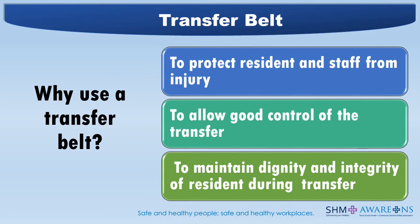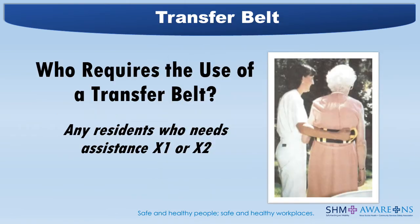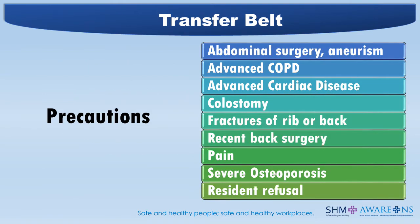How often are you grabbing a resident under the arms or by the back of the pants — sometimes referred to as pits and pants? Any resident who needs assistance from one or two people requires the use of a transfer belt. Look at the photo to see how the worker is holding onto the loop — they are not sliding their hand into the loop. Precautions include abdominal surgery or aneurysm, advanced COPD, advanced cardiac disease, colostomy, fractures of the rib or back, recent back injury, pain, and severe osteoporosis. If a resident refuses, then either the transfer doesn't happen or happens with the use of a lift.